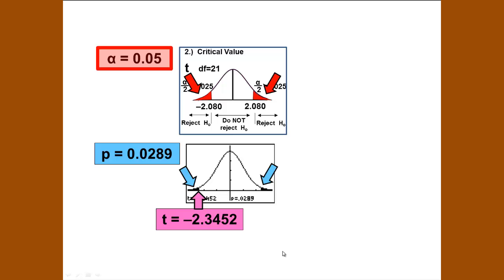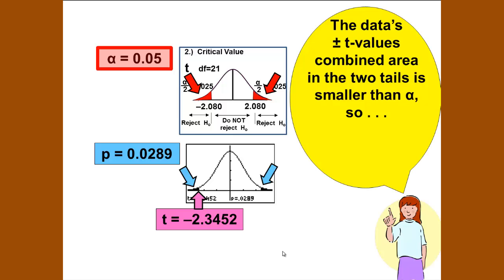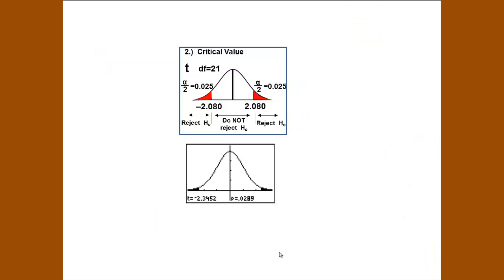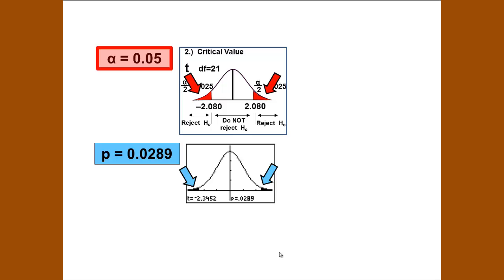Our alpha is 0.05. The data's plus or minus t-values combined area in the 2 tails is smaller than alpha. So the t-value falls in the reject the null region. Our p is 0.0289, our alpha is 0.05, and our t is negative 2.3452. Our conclusion is to reject H sub 0, the null.